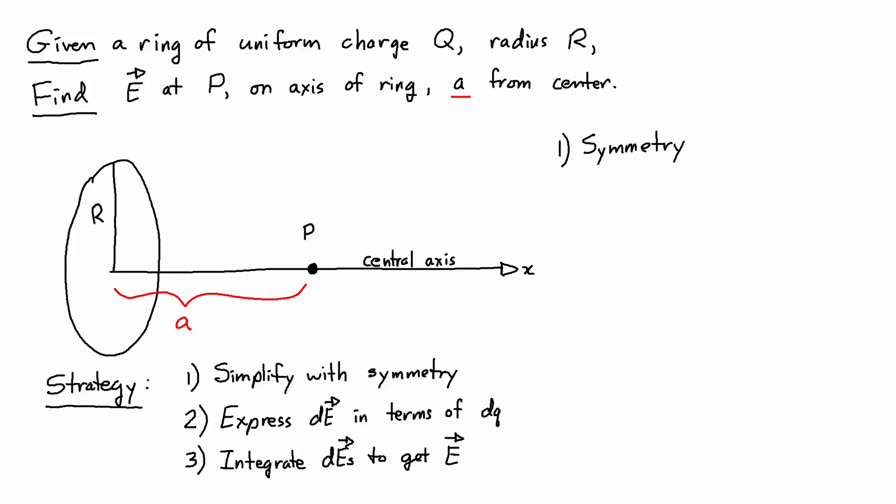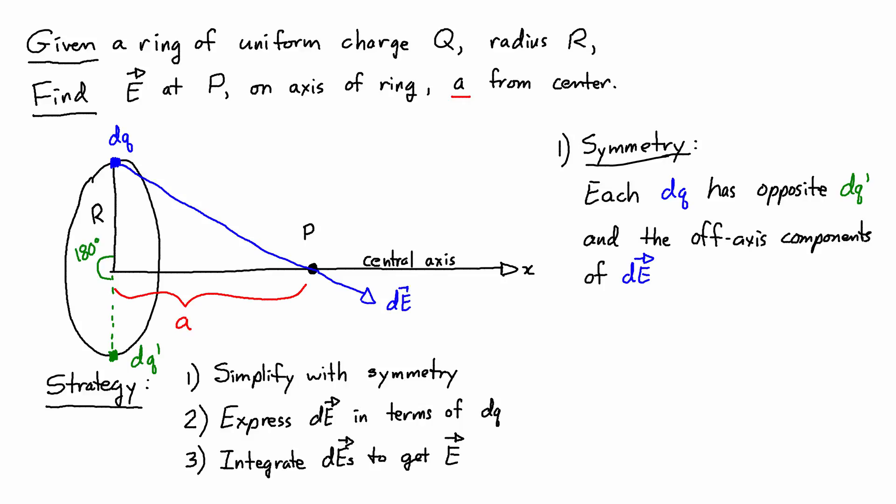So for the first step, using symmetry, I notice that each dq, and I'm showing the dq here in blue at the top of the ring, has an opposite dq prime, which I'm showing in green at the bottom of the ring, and their off-axis components of dE and dE prime cancel out.